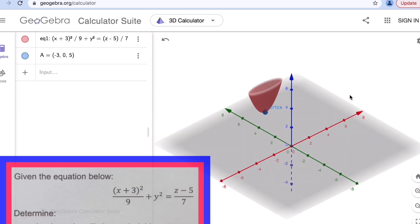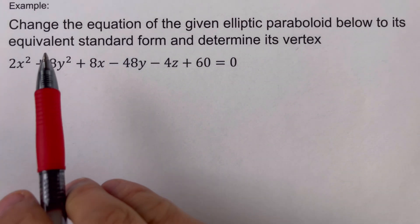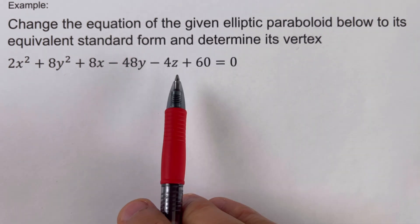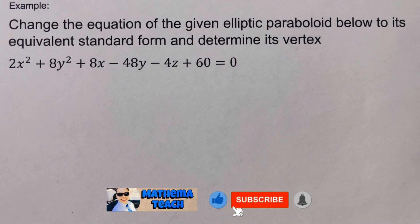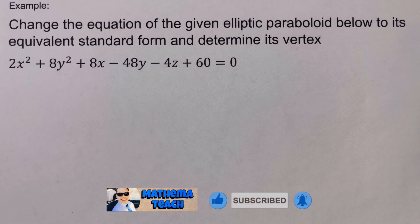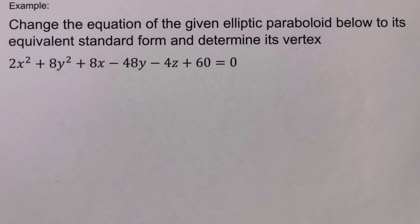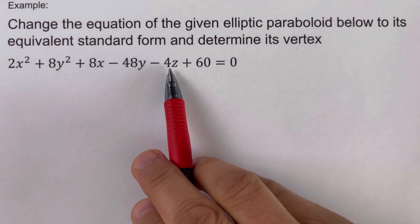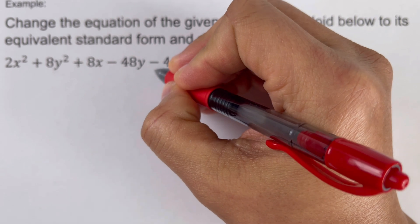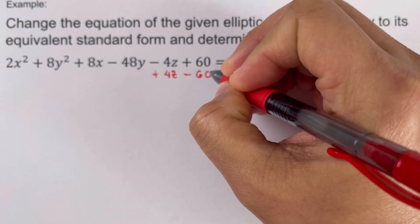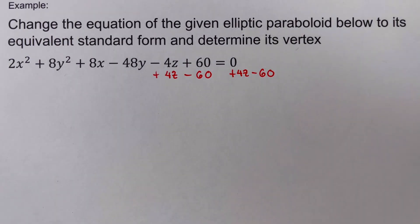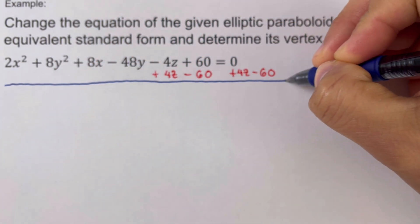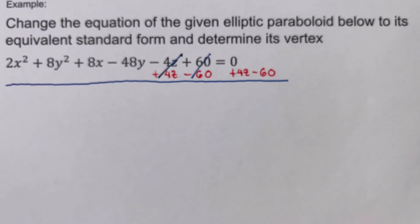In the third example, we need to convert the general equation of an elliptic paraboloid to its standard form and determine the vertex. We start by moving the z and constant terms to the other side — adding 4z and subtracting 60 from both sides — then cross out those terms from the original side.